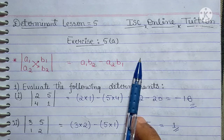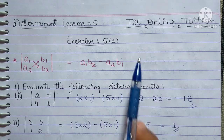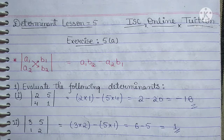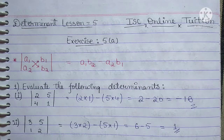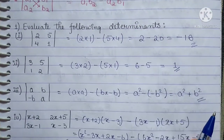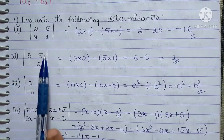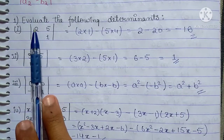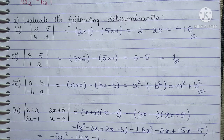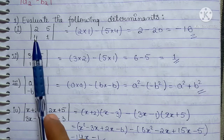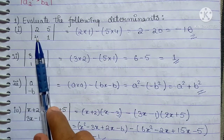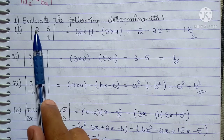यह हमारा solve करने का तरीका है। अब हम first question से start करते हैं: Evaluate the following determinant. हमारा matrix है [2, 5; 4, 1]। अब हम क्या करेंगे — इसका multiplication इससे minus इसका multiplication इससे।